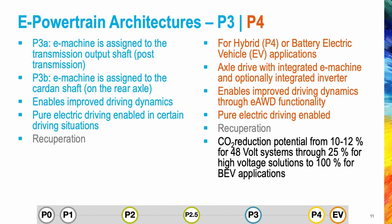In P3 architecture, the electric machine is connected through a gear mesh with the transmission. The electric machine is decoupled from the internal combustion engine and its speed is a multiple of the wheel speed. In P4 configuration, the electric machine is connected through a gear mesh on the rear axle of the vehicle, decoupled from the internal combustion engine and located in the rear axle drive or in the wheel hub.